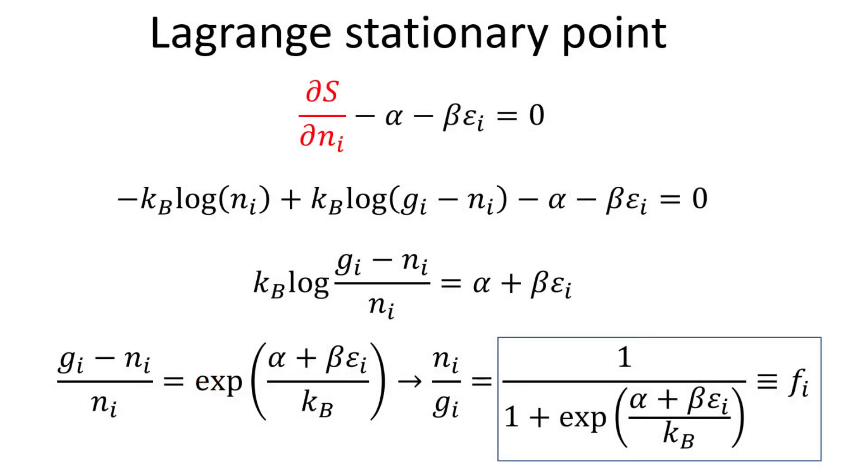Returning back to the Lagrange stationary point, we can now substitute the entropy stationary point into the expression. The terms involving logarithms can be combined, and with some algebra, we can arrive at an expression for the electron occupation for energy level i, which is the ratio between the number of electrons N sub i to the total available states G sub i at that energy level. This occupation factor is the Fermi-Dirac function we are after, and what is left is to determine the Lagrange multiplier constants alpha and beta.